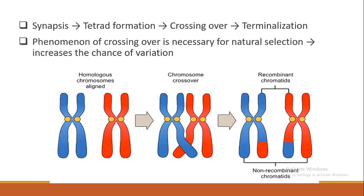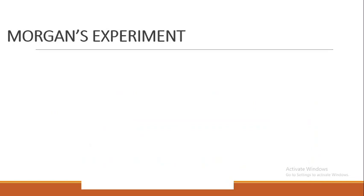The phenomenon of crossing over is very important for natural selection because it increases the chance of variation, and variation is the most important requirement for evolution. Crossing over is one of the key reasons we are able to evolve — not the only reason, but certainly one of the important ones contributing to variation and hence evolution.